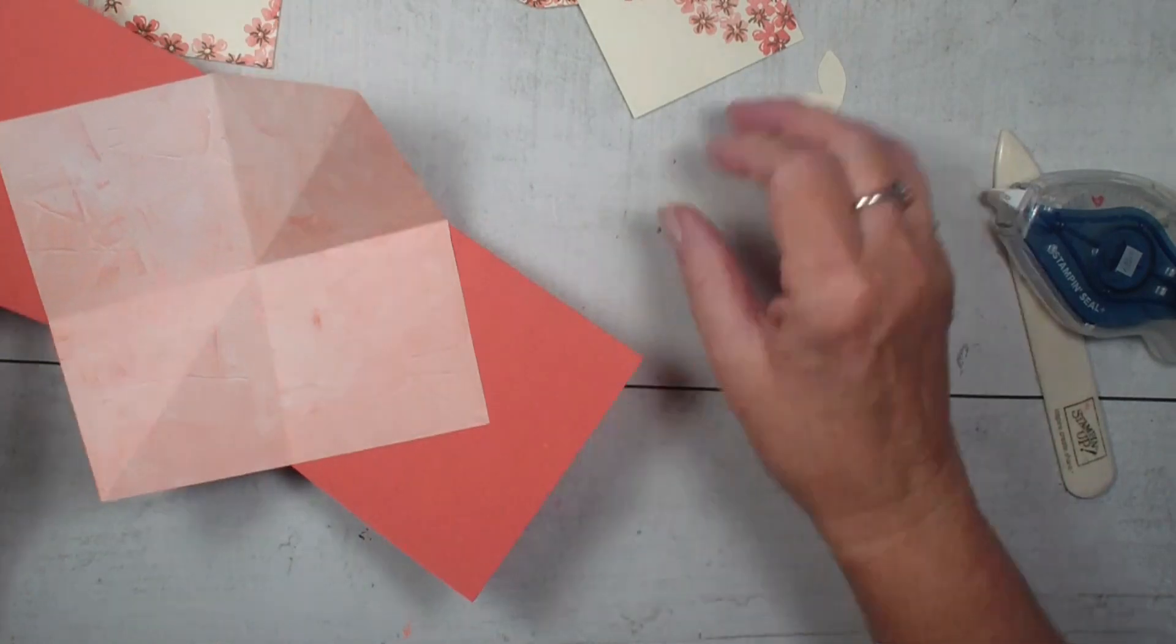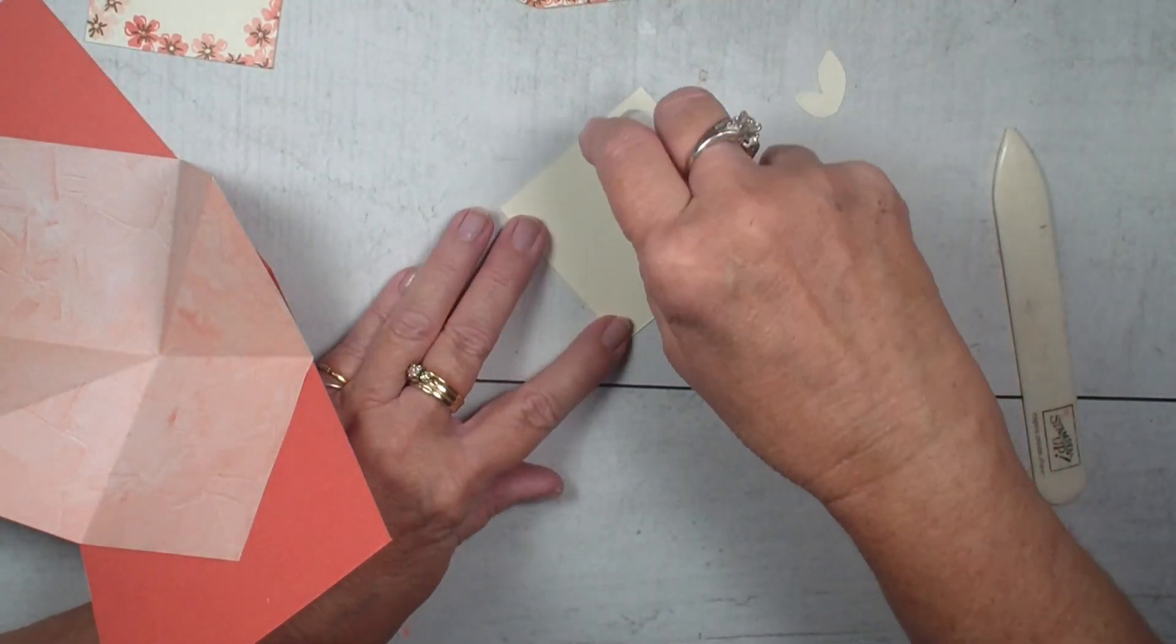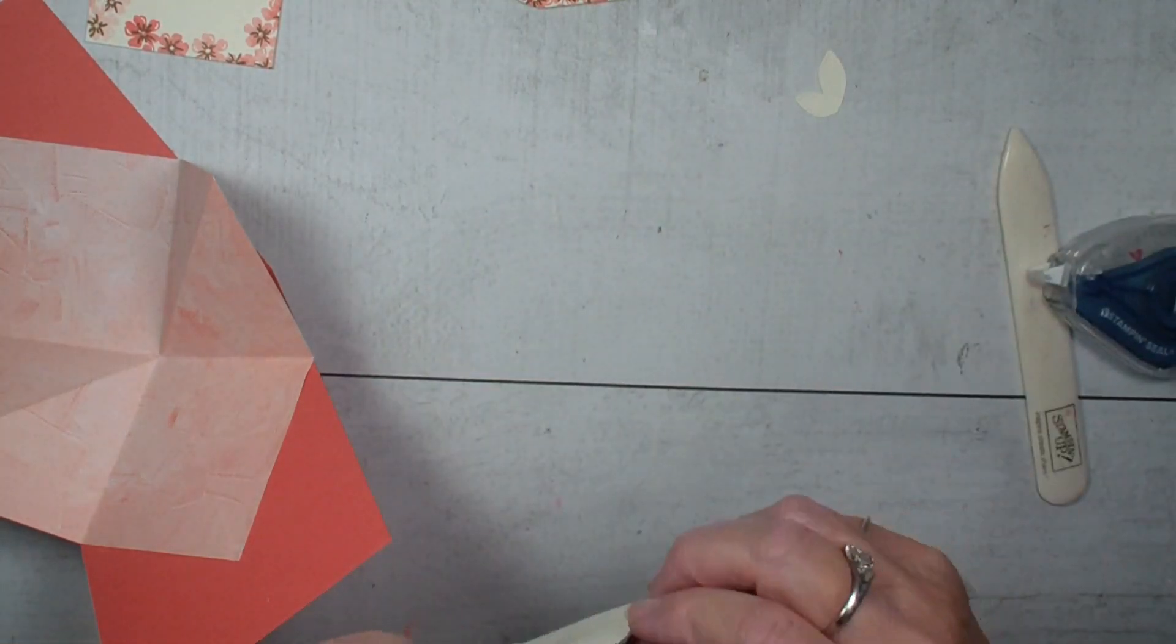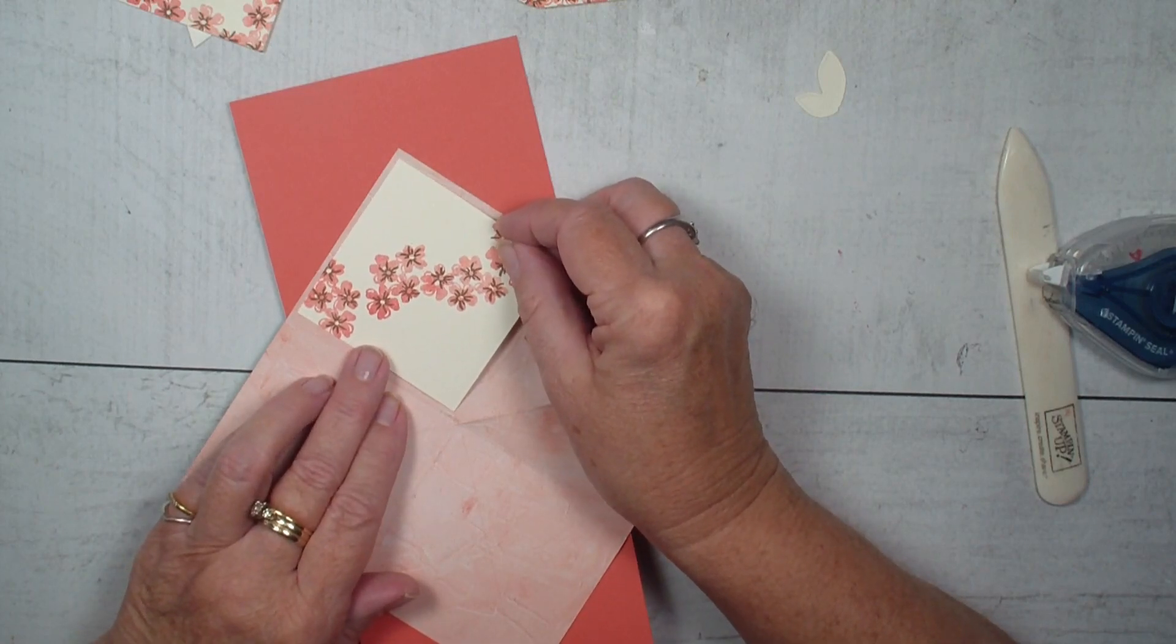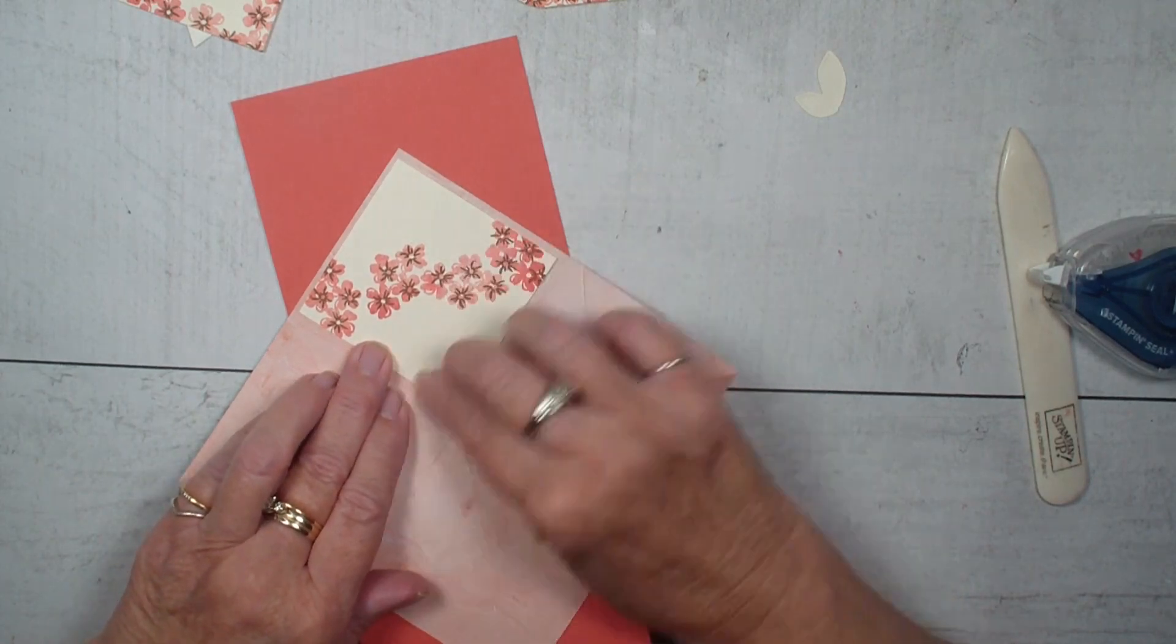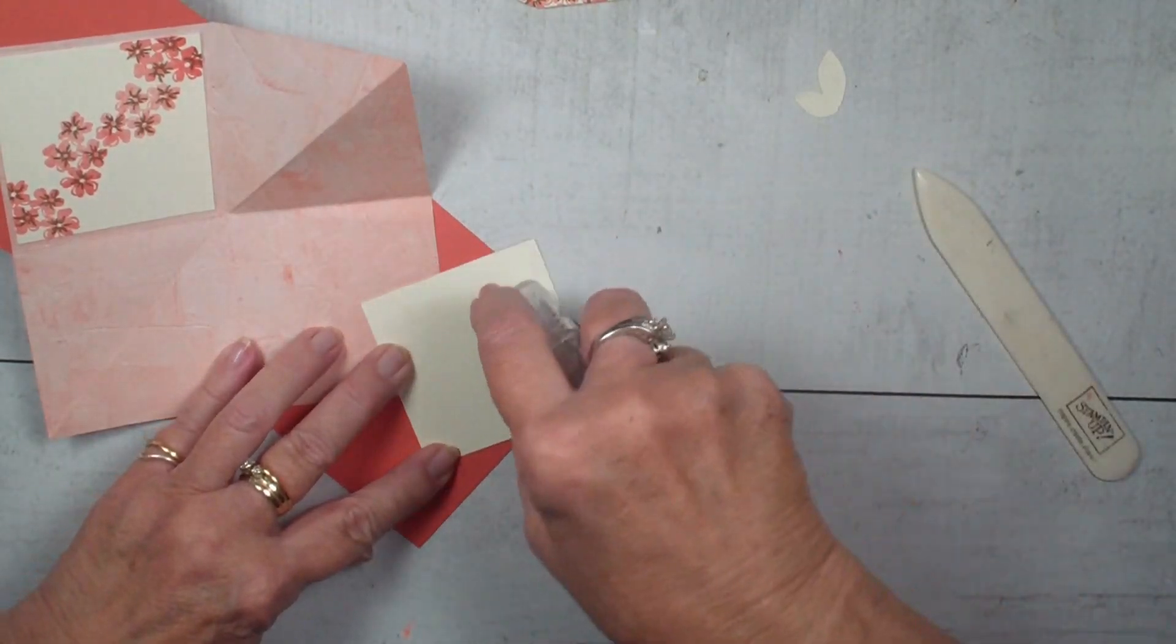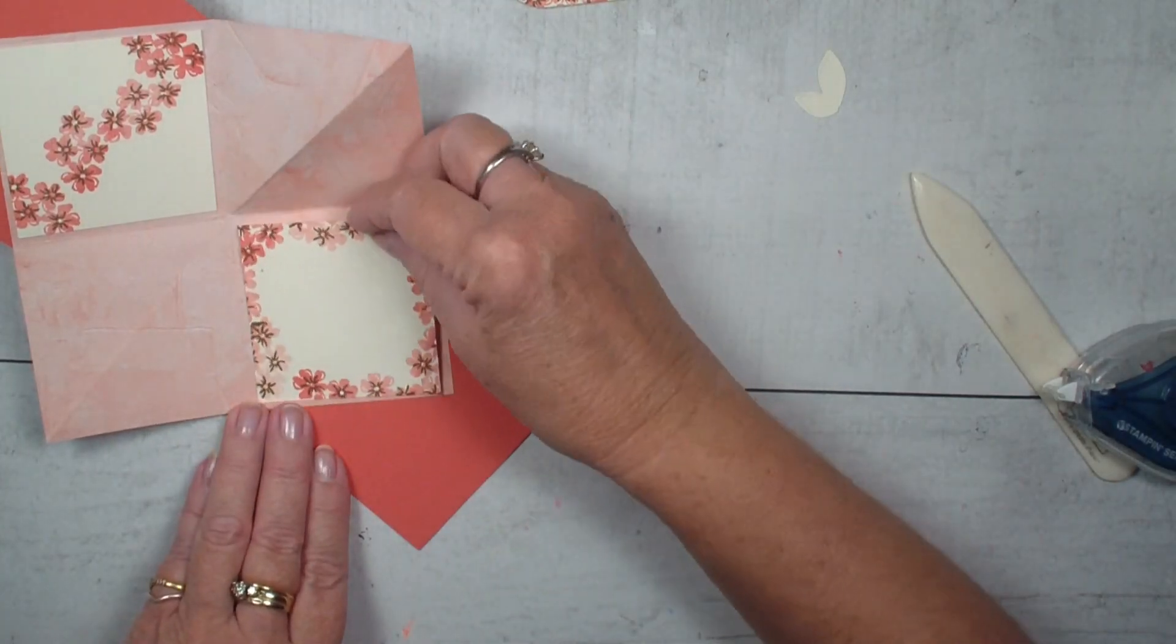Next what I'm going to do is take those vanilla pieces that I have already stamped. Again, this is very vanilla and we are going to put that on the inside of our card. This gives us some room to write.